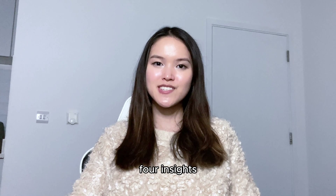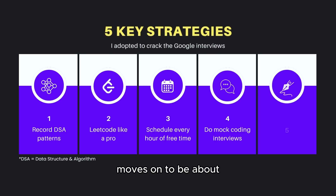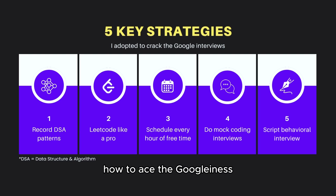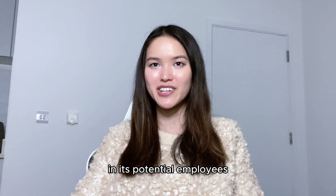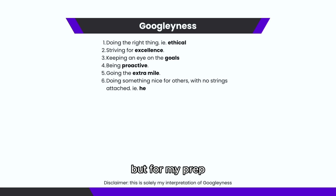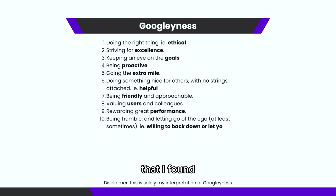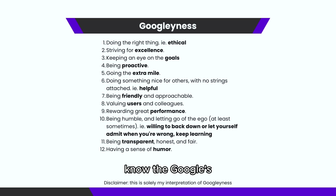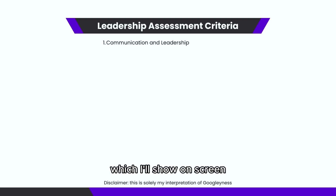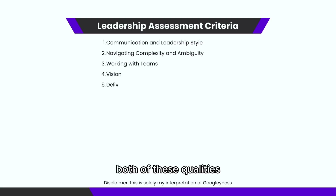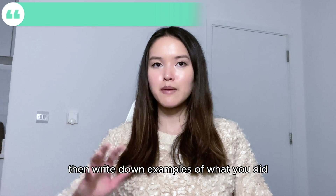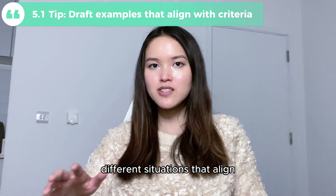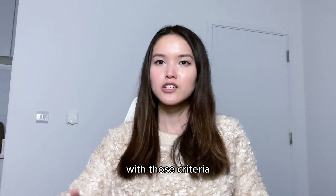The previous four insights are on coding interview prep. The fifth insight moves on to how to ace the Googliness and leadership interview. Googliness is a myriad of qualities and characteristics that Google seeks in its potential employees. It's not officially defined, but for my prep I used 12 criteria that I found, which I'll show on screen. For leadership, know Google's leadership assessment criteria inside out. To prep for both, create a Google doc, find some behavioral and hypothetical questions online, then write down examples of what you did or would do in different situations that align with those criteria.